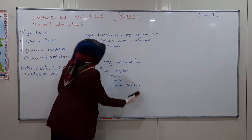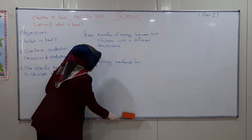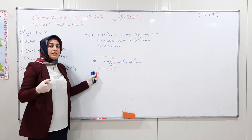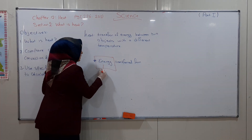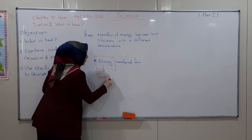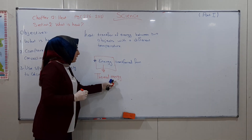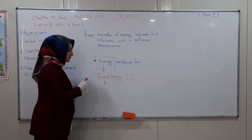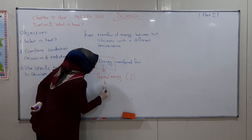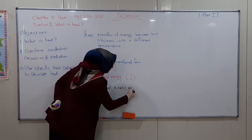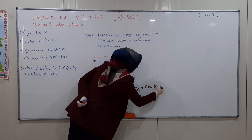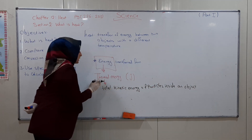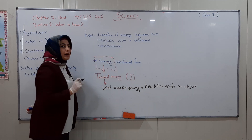After that, we have to know which type of energy is transferred during heat — which type of energy can be transferred from a high temperature object to a low temperature object. This type of energy is called thermal energy. Thermal energy's unit is joule, because it is energy.